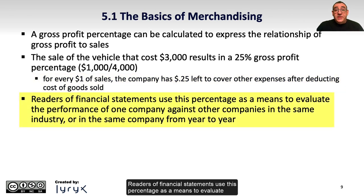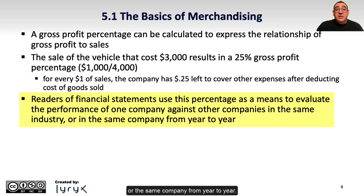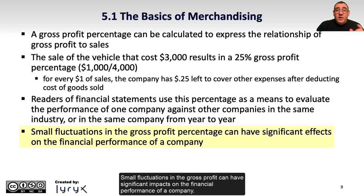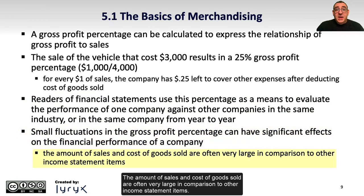Readers of financial statements use this percentage as a means to evaluate the performance of one company against other companies in the same industry, or the same company from year to year. Small fluctuations in the gross profit can have significant impacts on the financial performance of a company, as the amounts of sales and cost of goods sold are often very large in comparison to other income statement items.